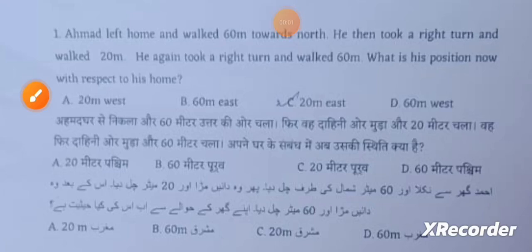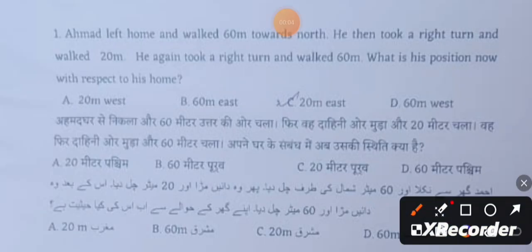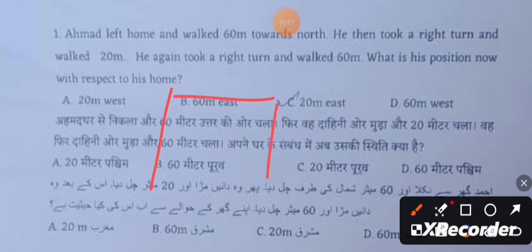Question 1: Amad left home and walked 60 meters towards north. He then took a right turn and walked 20 meters. He again took a right turn and walked 60 meters. What is his position now with respect to his home? The answer is 20 meters east.